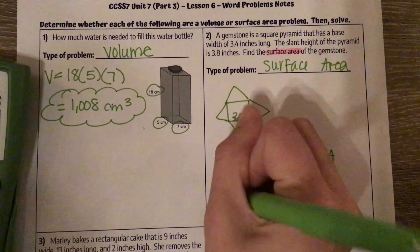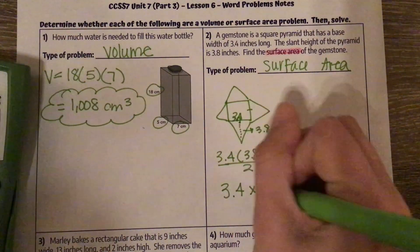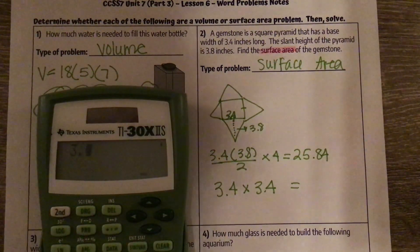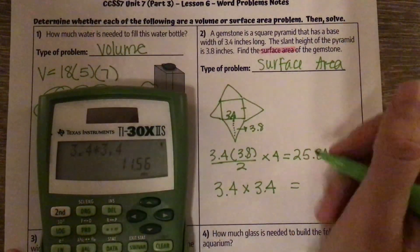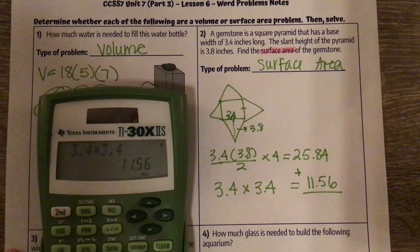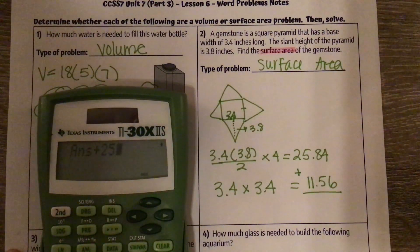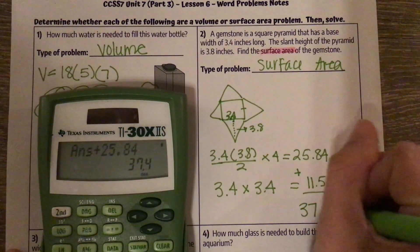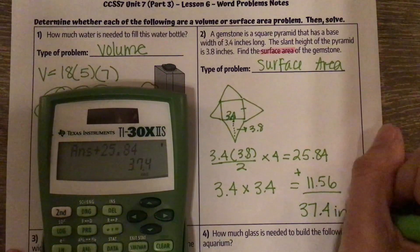And my base is just a square base, so 3.4 times 3.4 equals 11.56. So I'm adding these two together to get my total surface area. And I get 37.4 inches squared.